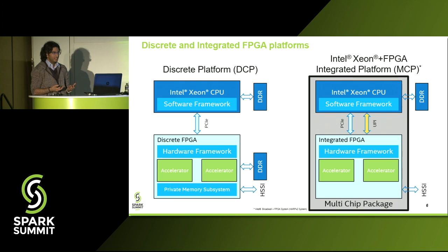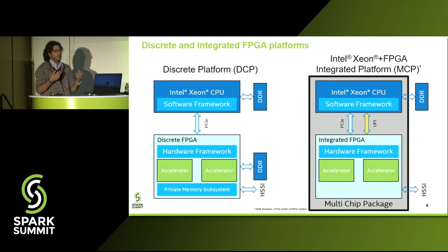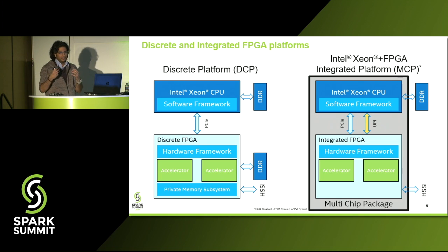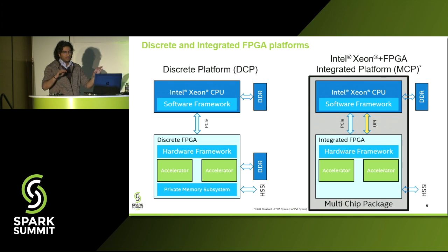There are two ways in which your FPGA can be part of your system. The first is the discrete, and the second is the integrated FPGA. On the discrete, you open a server chassis, take one of those discrete accelerators, put it into a PCI card, and that becomes your discrete platform. For the integrated platform, you have your general-purpose core and your FPGA all in a single package that is socket-compatible to your Xeons.